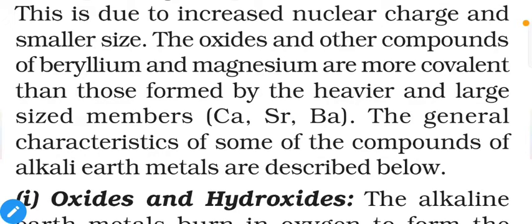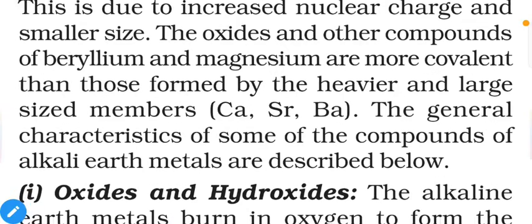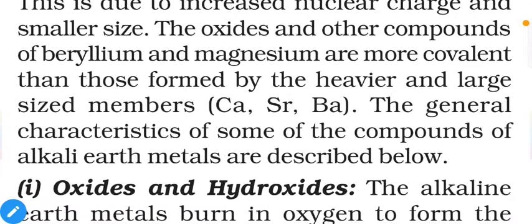The oxides and other compounds of beryllium and magnesium are more covalent than those formed by the heavier and larger sized members. The simple reason is that heavier and larger sized members have stronger ionic or metallic nature.